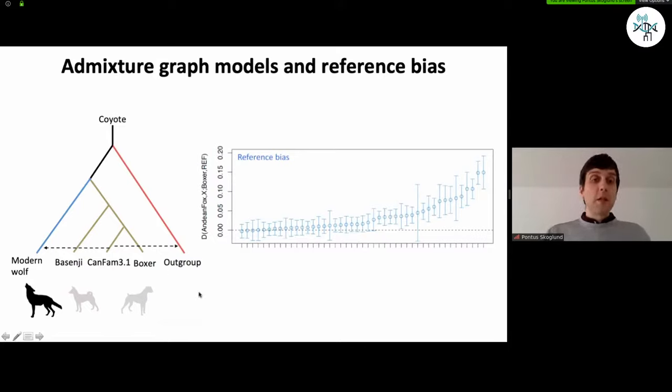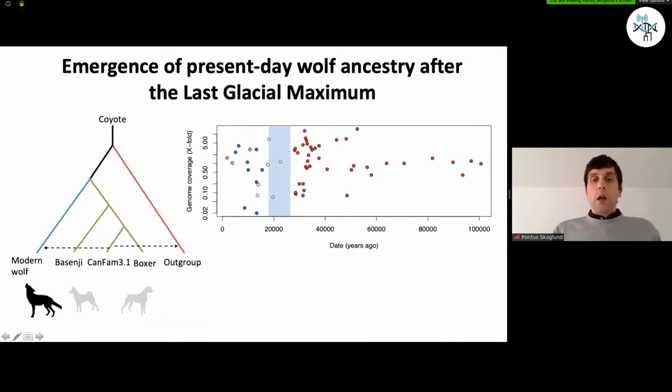And we ask the question, our ancient genome, does it fit as being on the modern wolf lineage, on the modern dog lineage, or does it fit as being an outgroup to modern dogs and wolves? And so this figure then shows time or the date of the ancient genome on the x-axis, up to 100,000-year-old genomes, which we're lucky to obtain. And each genome is colored by their assignment along this graph. And on the y-axis, I show the genome coverage just to show the sort of some of the uncertainty that may go into this analysis for some of the lower coverage genomes.